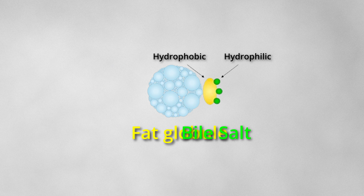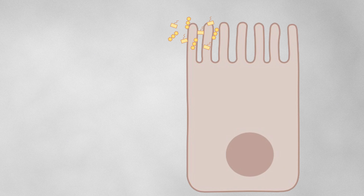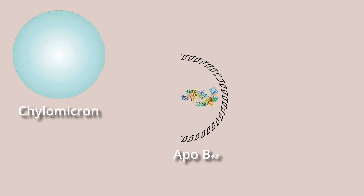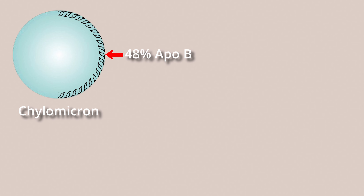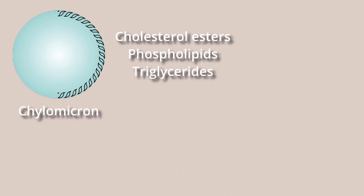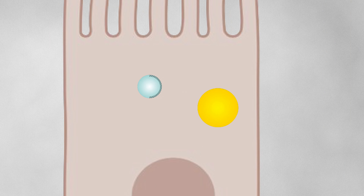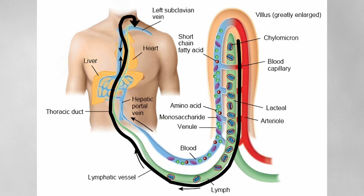Lipids in the digestive tract are emulsified by bile salts. Lipases then break down the lipids and the products are absorbed into the enterocytes. With the help of Microsomal Triglyceride Transfer Protein (MTP), enterocytes resynthesize lipids and package them into chylomicrons with ApoB48, containing 48% protein coated by the ApoB gene. A part of the resynthesized lipids are stored as cytosolic lipid droplets. Chylomicrons are then released from the basolateral side and enter the general circulation through the thoracic duct.